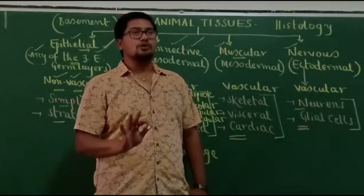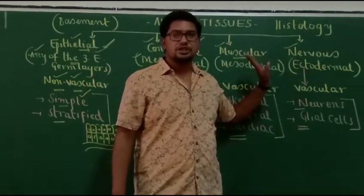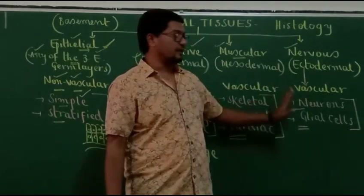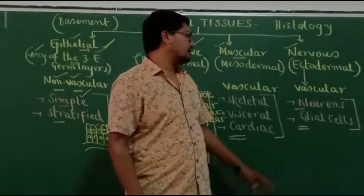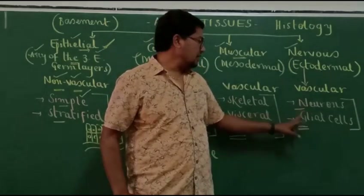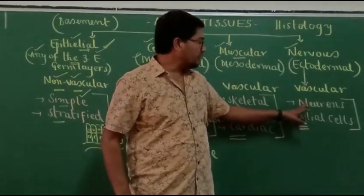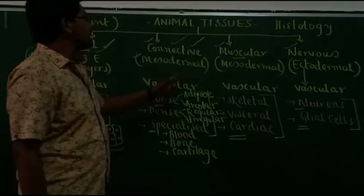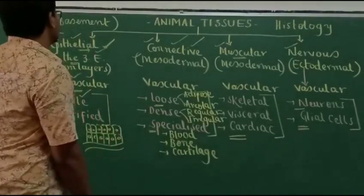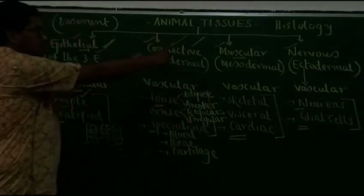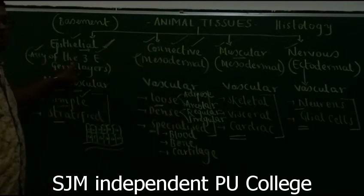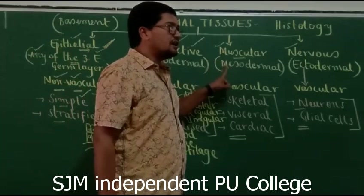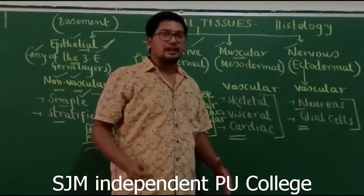Glial cells are the supporting cells of the nervous tissue. They cannot produce an action potential, but they support the functions of neurons. Unlike neurons, glial cells can divide. To summarize: the four types of tissues are epithelial, connective, muscular, and nervous. Epithelial tissues originate from any of the three embryonic germ layers; connective and muscular tissues are mesodermal in origin; nervous tissue is ectodermal in origin.